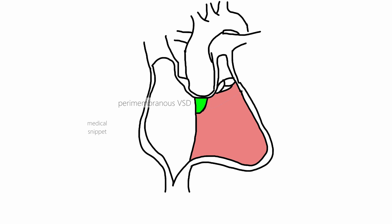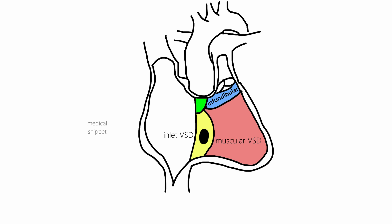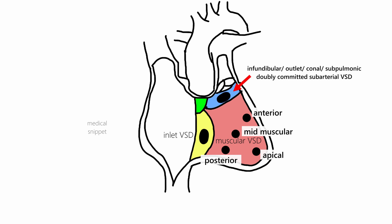The muscular part is divided into inlet, trabecular, and infundibular components. The infundibular component is formed by the bulbar or conal septum. If the inlet component is involved, it is called inlet VSD. A defect in the trabecular part of the muscular septum is called muscular VSD, which can be posterior, anterior, bimuscular, or apical. A defect in the conal septum is called infundibular, outlet, conal, subpulmonary, or doubly committed subarterial VSD.